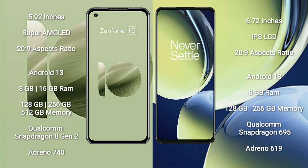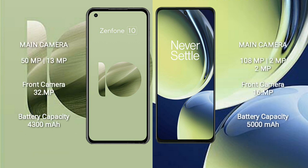Asus Zenfone 10 features a Qualcomm Snapdragon 8 Gen 2 processor and Adreno 740 GPU. OnePlus Nord CE 3 Lite comes with 8GB RAM and 128GB or 256GB internal storage, with a Qualcomm Snapdragon 695 processor and Adreno 619 GPU.